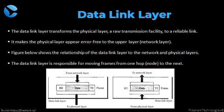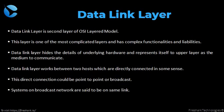The data link layer is responsible for moving frames from one hop node to the next node. It is the second layer of the OSI model. This layer is one of the most complicated layers and has complex functionalities and liabilities. Data link layer hides the details of the underlying hardware and can represent itself to the upper layer as a medium to communicate.